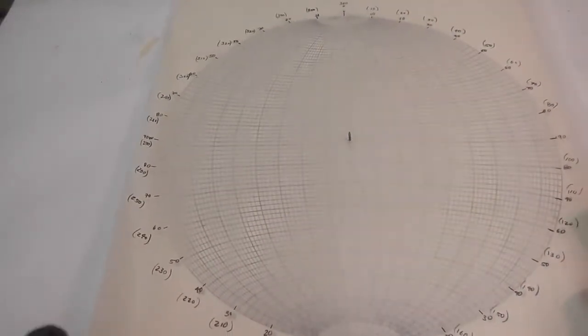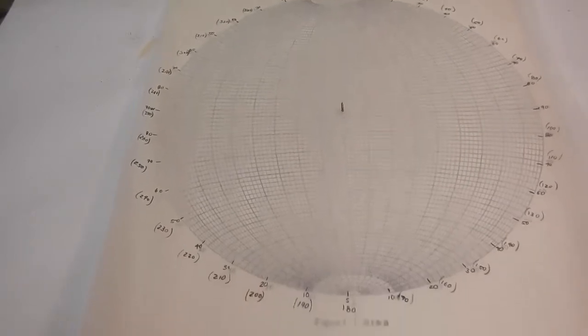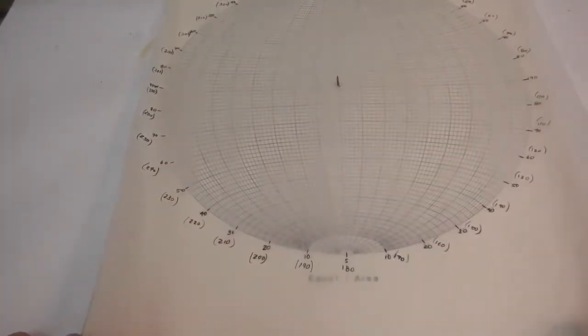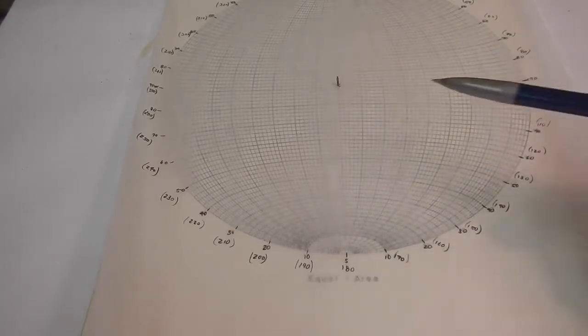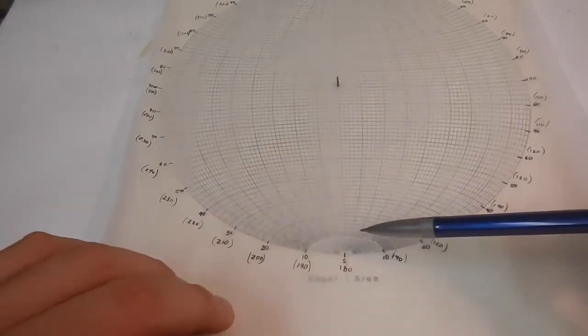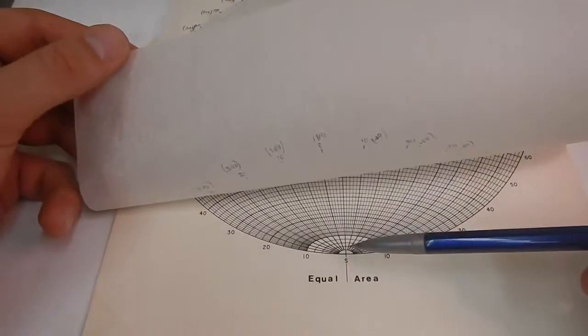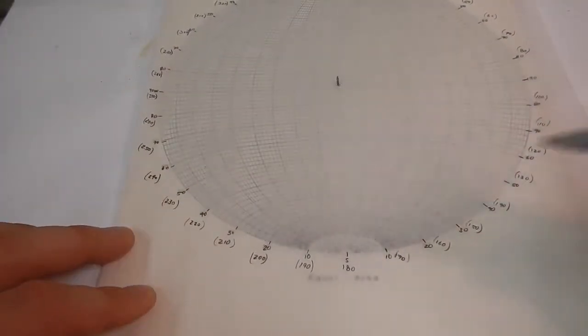The first thing you should do is, on your tracing paper, we'll just look at the south here, is you're going to mark your north, south, east, and west first. So you'll draw a little line. Here I draw a tick where south is on the stereo net, so it lines up, and you'll do that with south, east, north, and west.